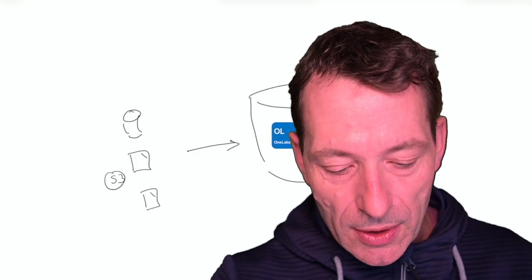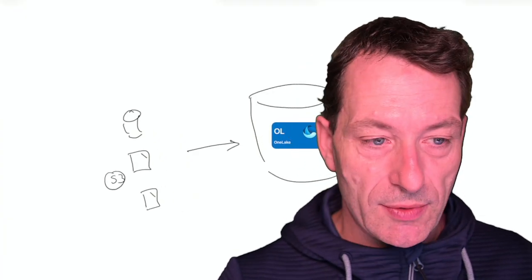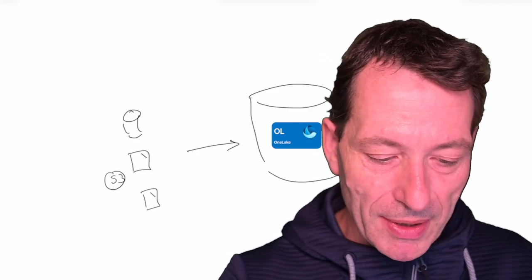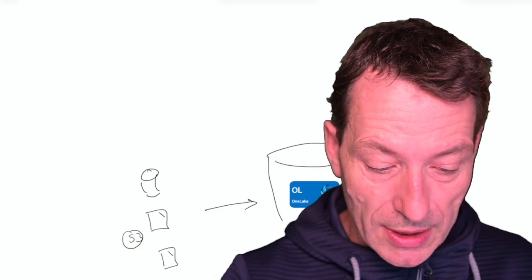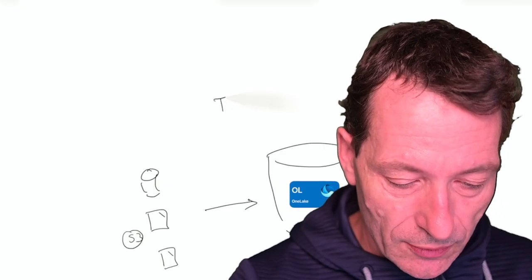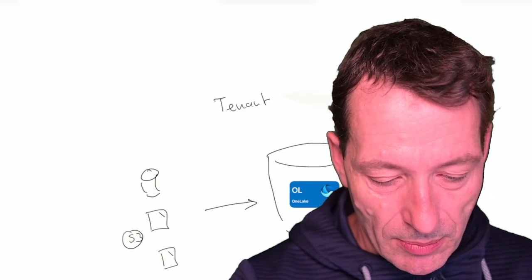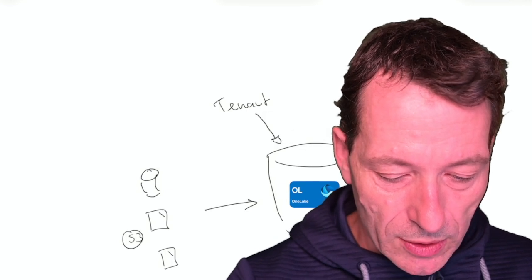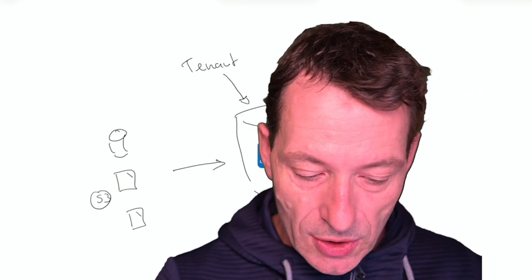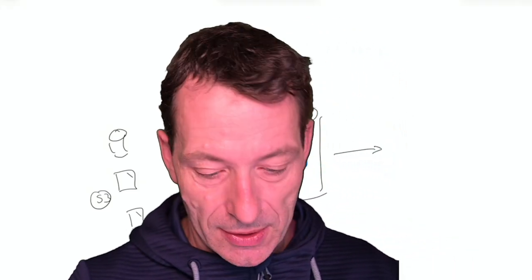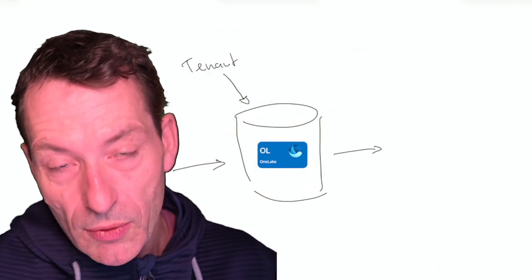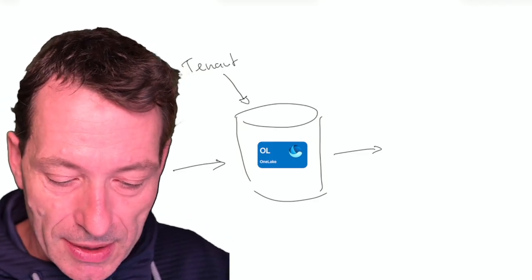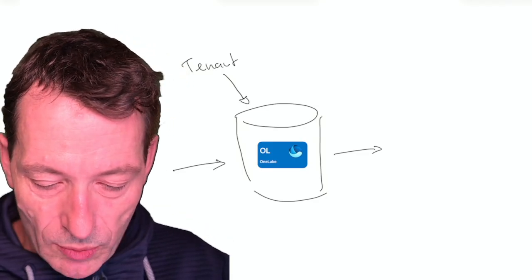Everything of that will go into OneLake in a structure. So how is OneLake structured? There's a very basic structure. As I said, we have one OneLake per tenant. So the tenant from a logical point of view is above OneLake. In your tenant, there is one OneLake. And the one OneLake serves all your fabric capacities that you have. You might have one, you might have zero, you might have 10 or 15 or whatever fabric capacities.